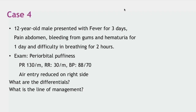Bedside ultrasonography can also assess cardiac contractility — you can calculate ejection fraction to determine whether there is a cardiogenic component to the shock. In facilities where bedside USG is not available, I strongly advocate investing in it; it is highly cost-effective, similar to having a pulse oximeter in COVID. Without USG, other clinical markers — heart rate, respiratory rate, liver size, crepitations, hematocrit — can be used, but bedside USG is the gold standard.